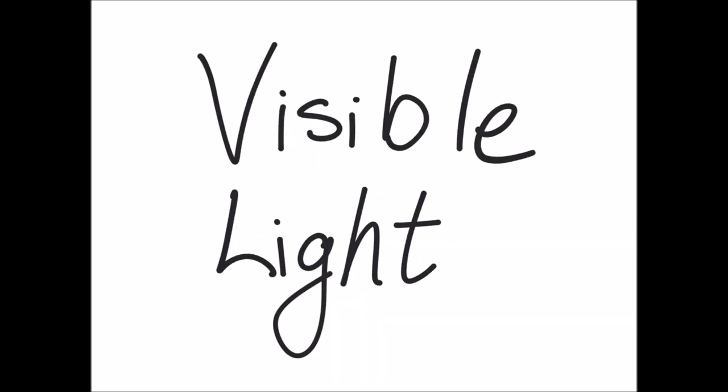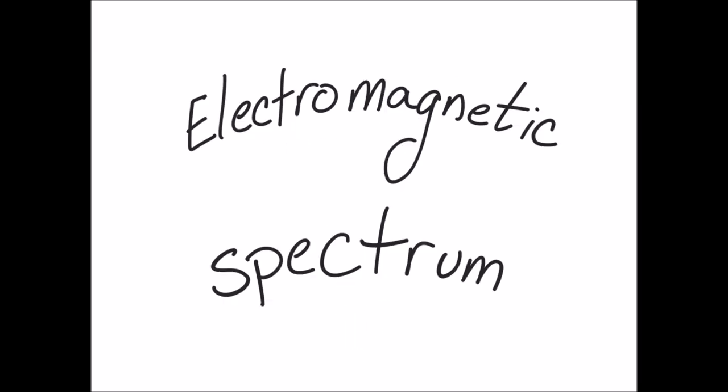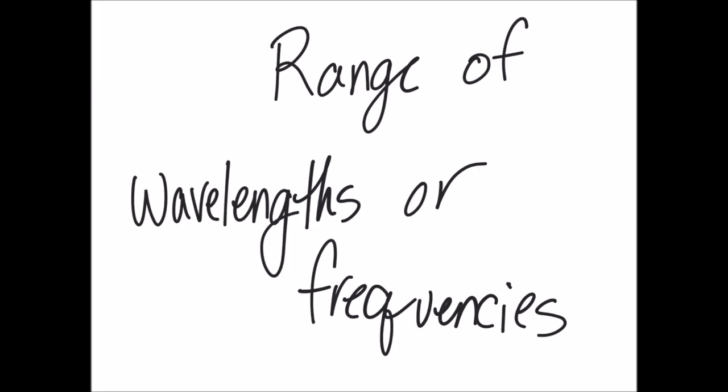When we talk about light, we are really talking about visible light. So what is the difference between light and visible light? Light is a broad term which covers the electromagnetic spectrum. The electromagnetic spectrum is a range of wavelengths or frequencies over which the electromagnetic radiation extends. Please note when I say light and when I say radiation, in this context I'm talking about the same thing.